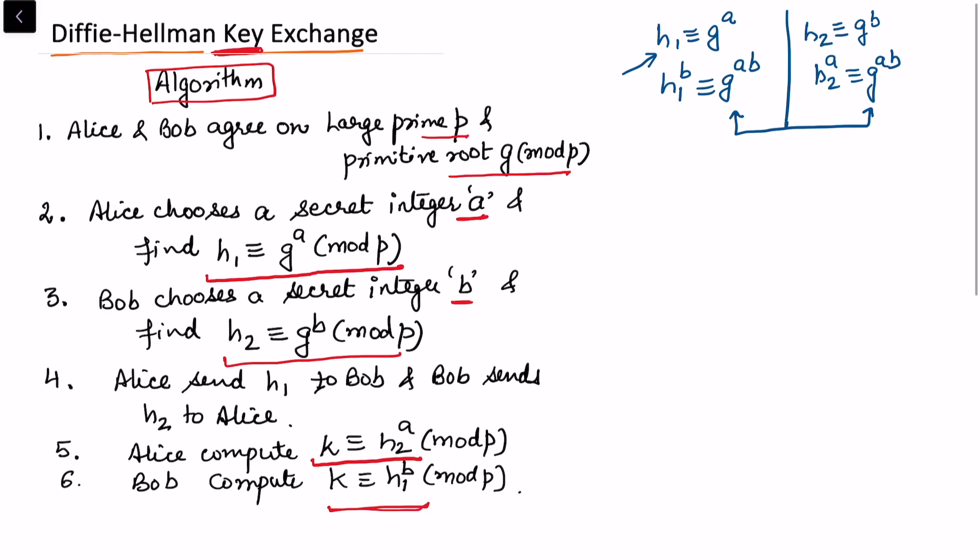Now since the right-hand side is the same for both, and g is a primitive root, and you're doing this with respect to one prime, obviously h1 to the power b must be the same as h2 to the power a. That's the key.